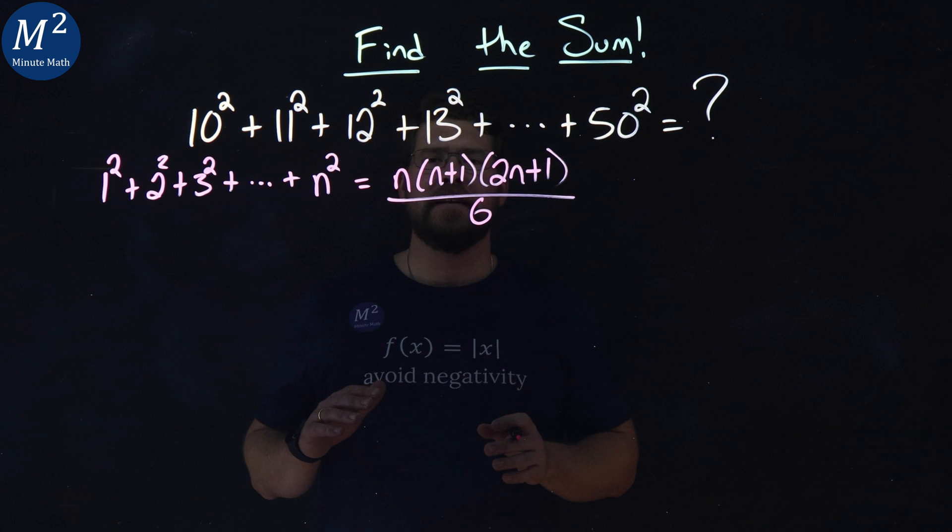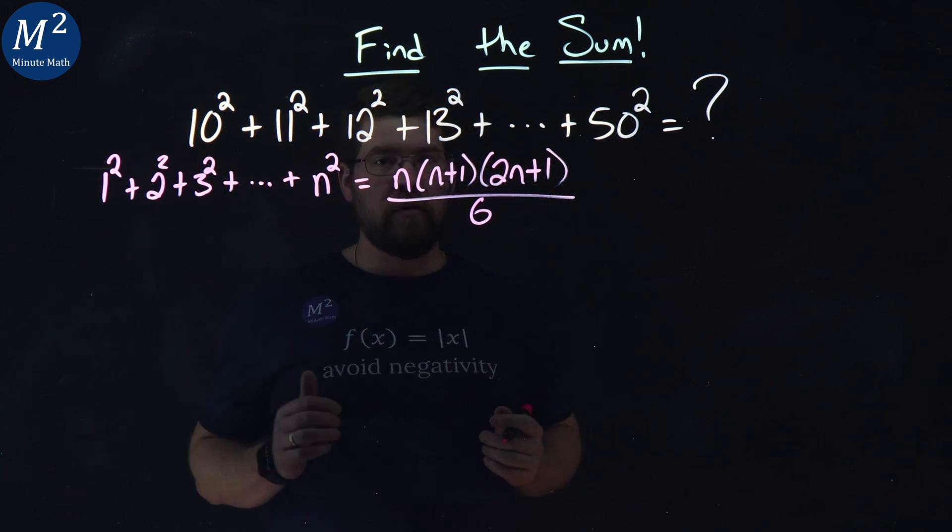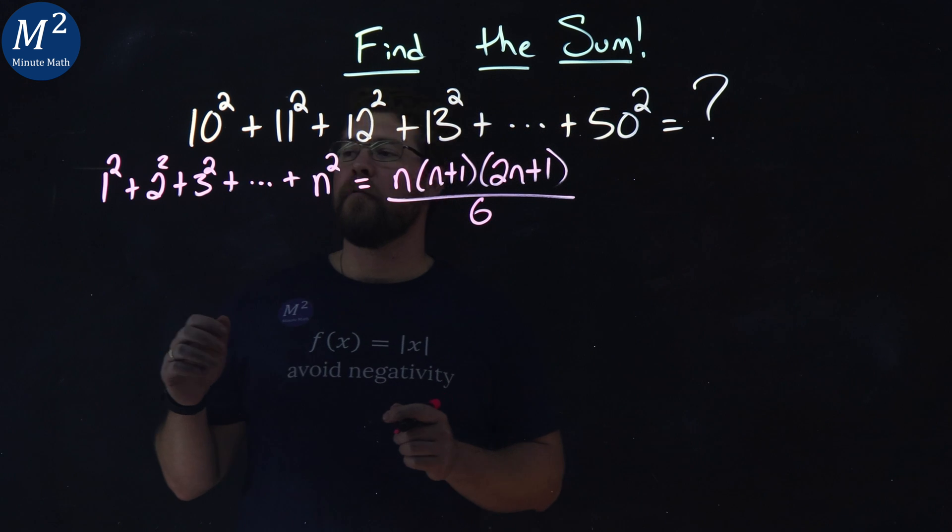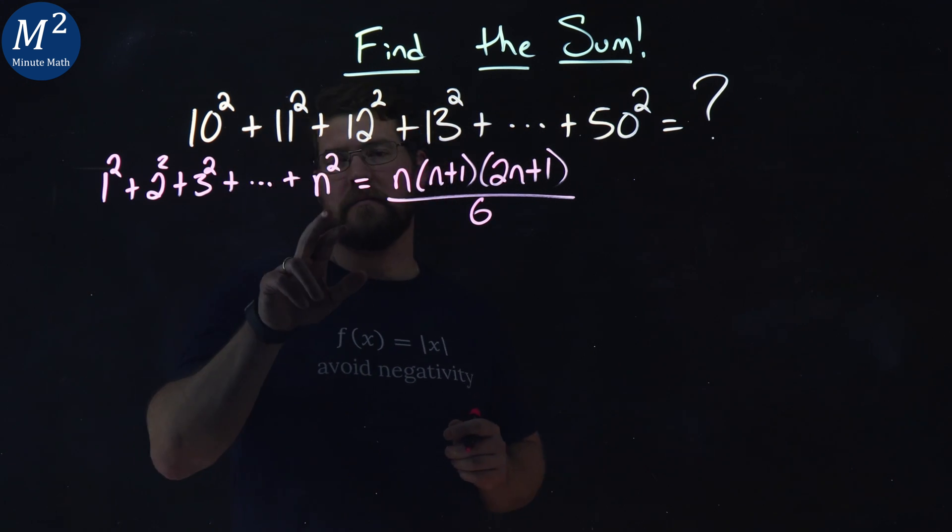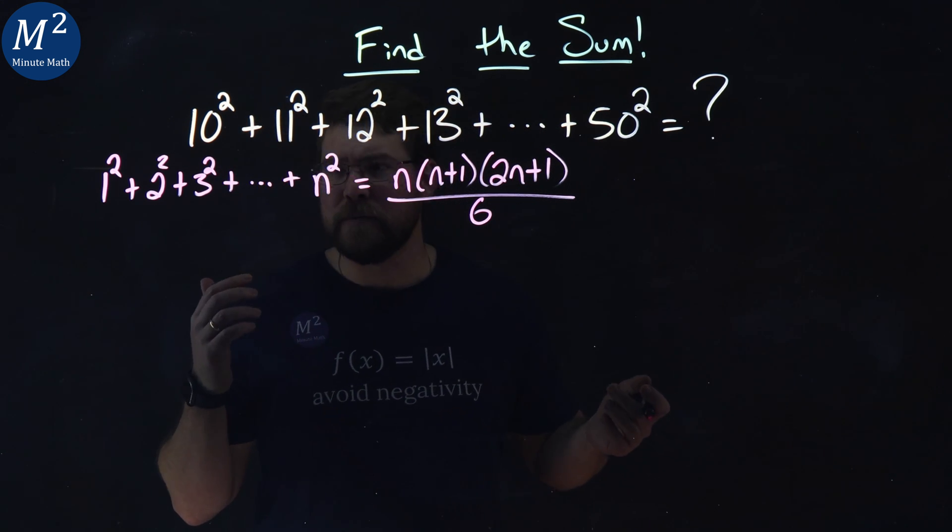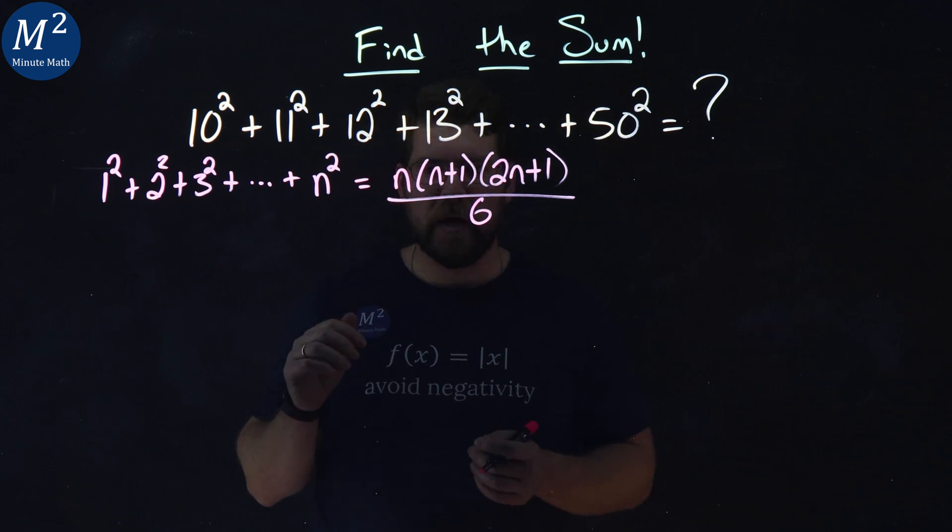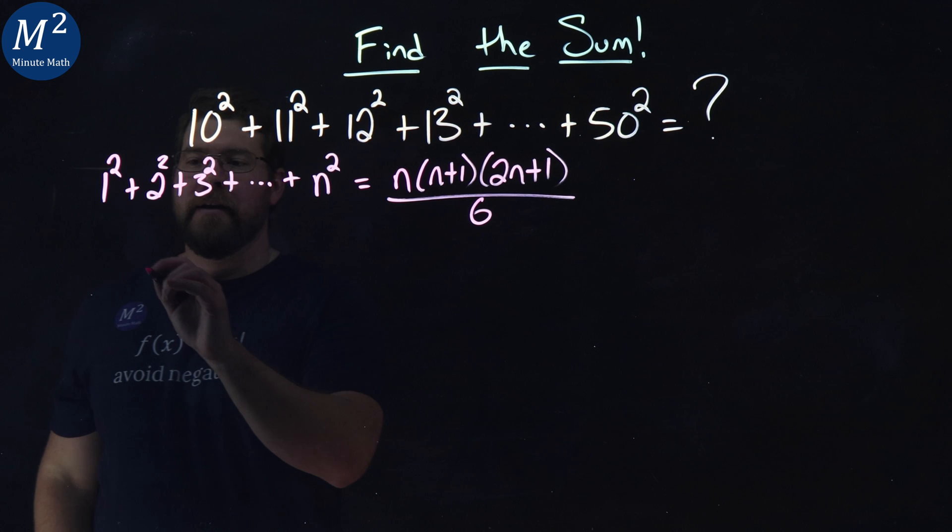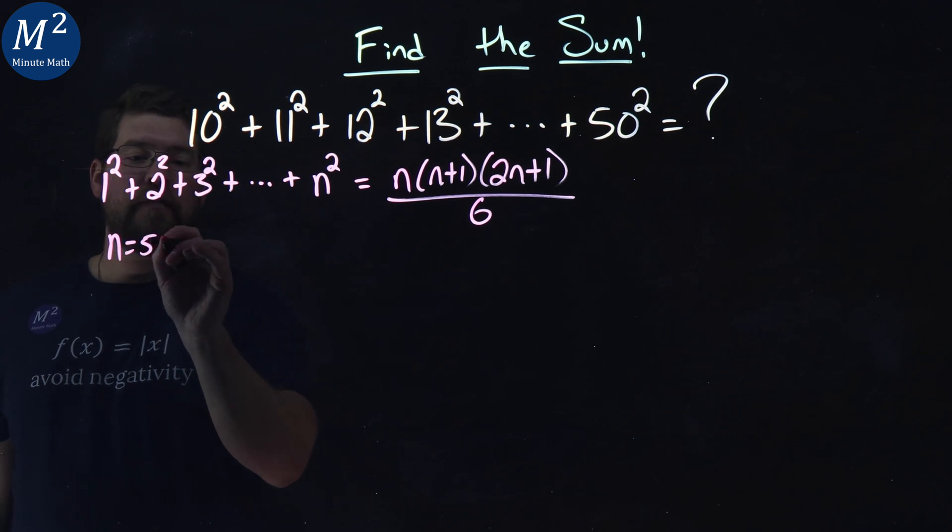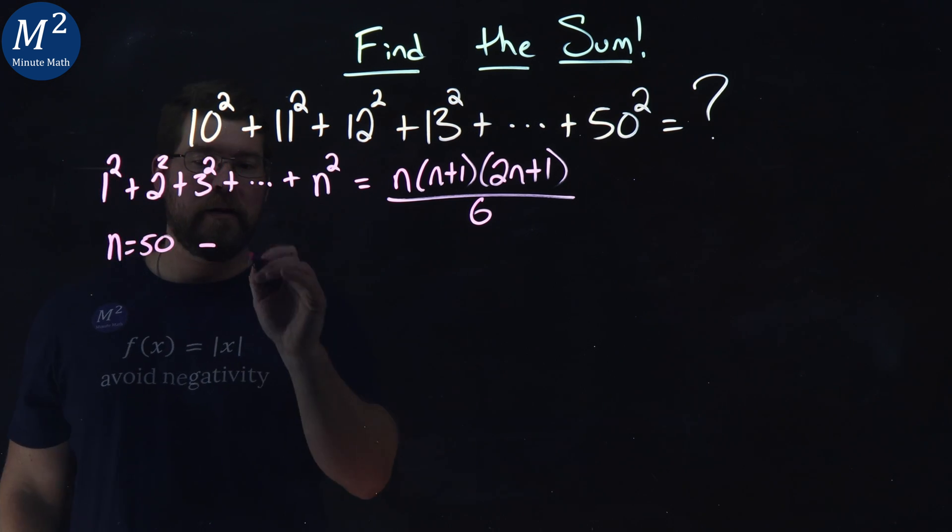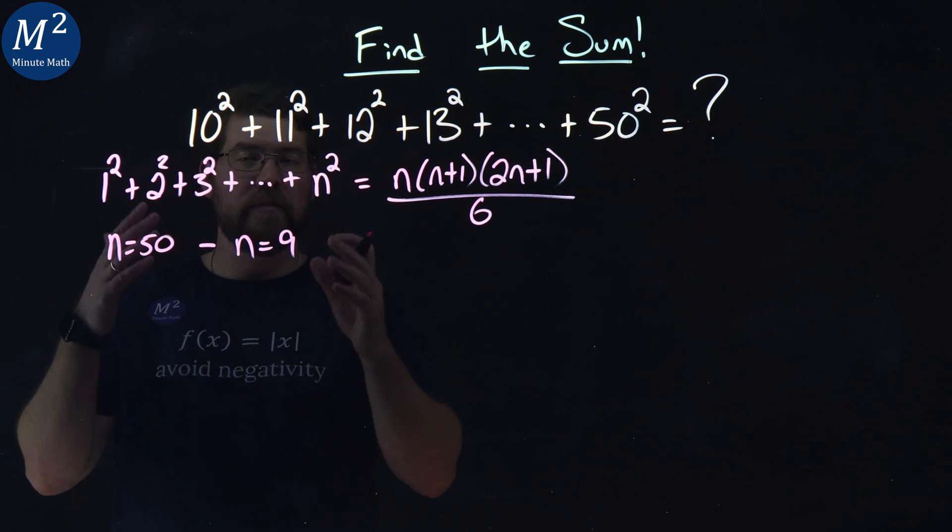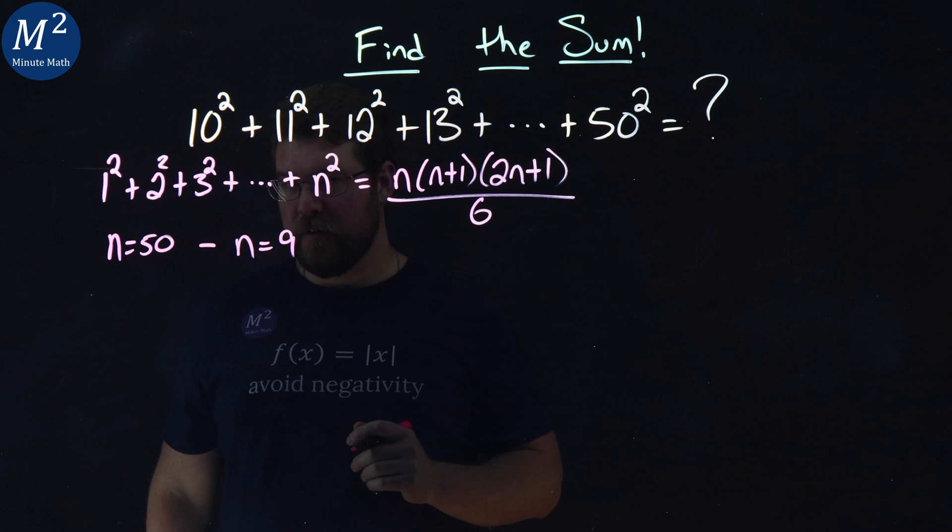Now this formula needs to be adapted though for our problem. We are going from 10 to 50 and our formula only refers from 1 to any number that we choose and every number in between. So the logic is going to follow. What I want to do is take when n equals 50 and subtract from it when n equals 9. And that should leave us with the result from 10 to 50.